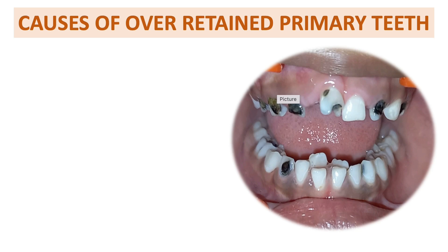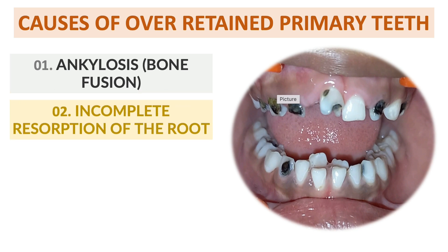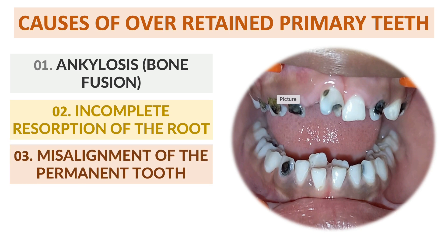Another cause is ankylosis — if a primary tooth becomes fused to the bone, it will prevent it from falling out. A second cause is incomplete resorption of the root; if root resorption is incomplete in the primary dentition, it will obstruct permanent tooth eruption.